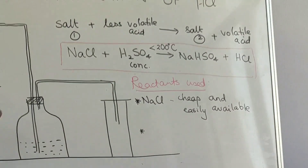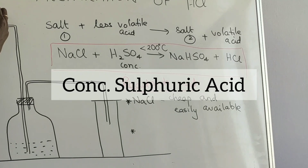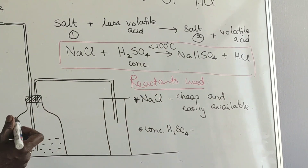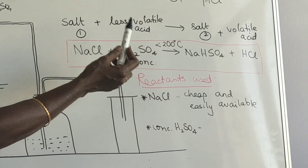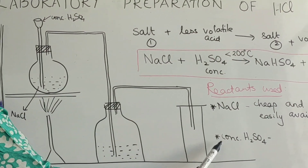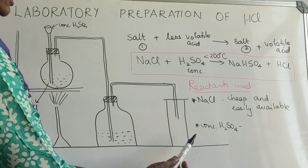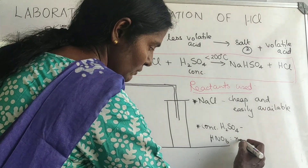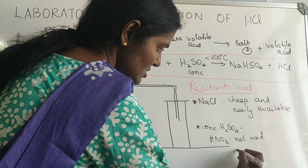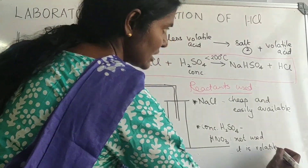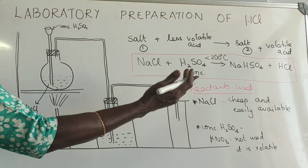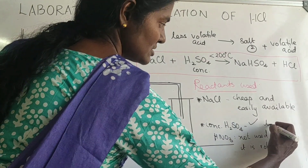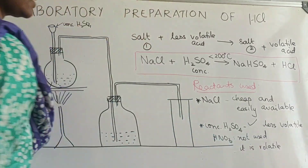The next reactant is concentrated sulfuric acid. We use it because only a less volatile acid can displace a volatile acid from its salt. You might ask why we can't use nitric acid — it's simply because nitric acid is volatile. Hydrogen chloride is also volatile, so both would evaporate and we would not get hydrogen chloride at all. Concentrated sulfuric acid is preferred because it is less volatile.